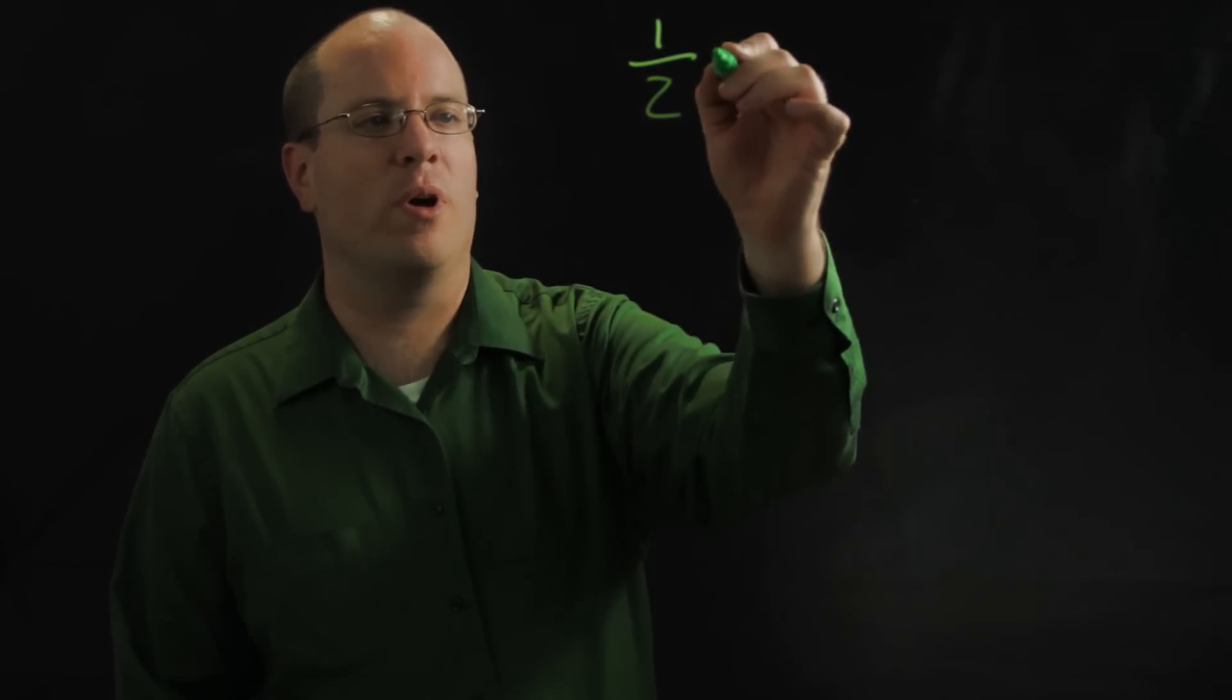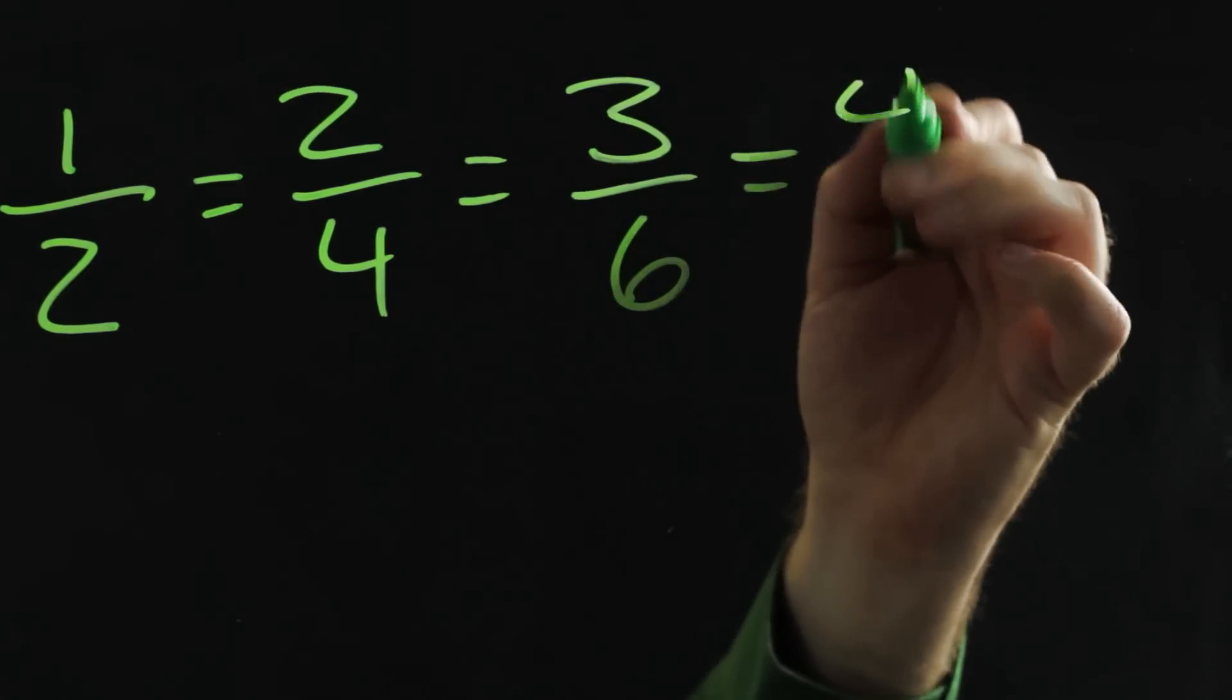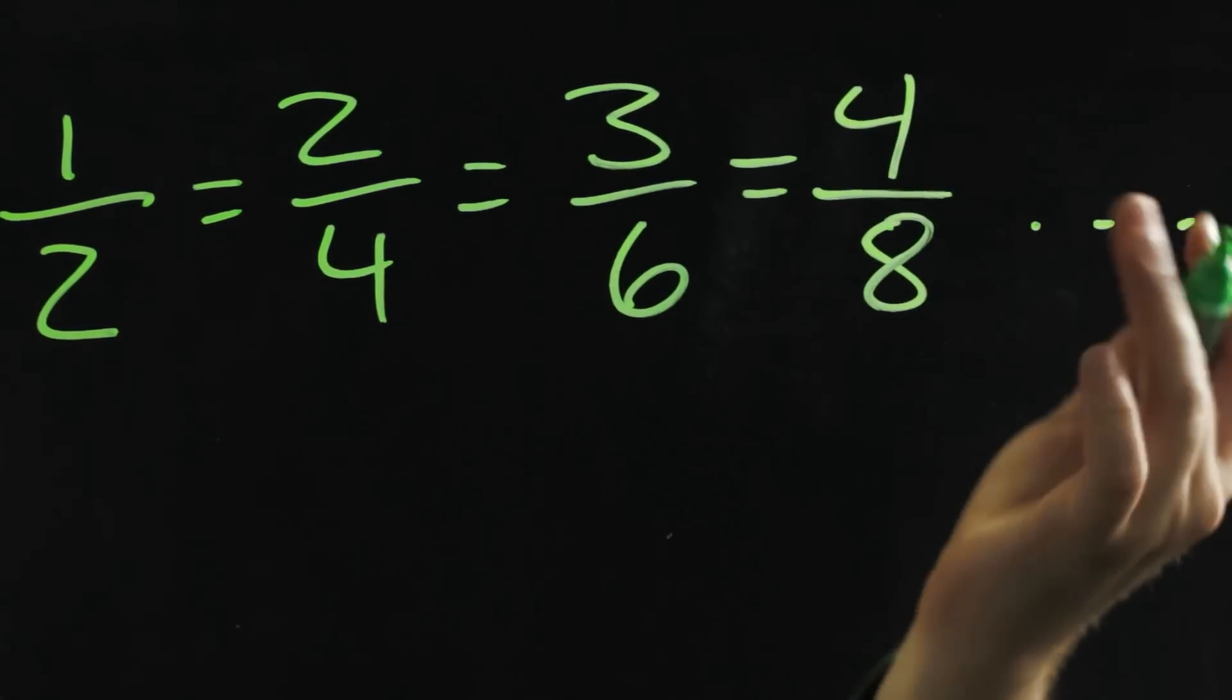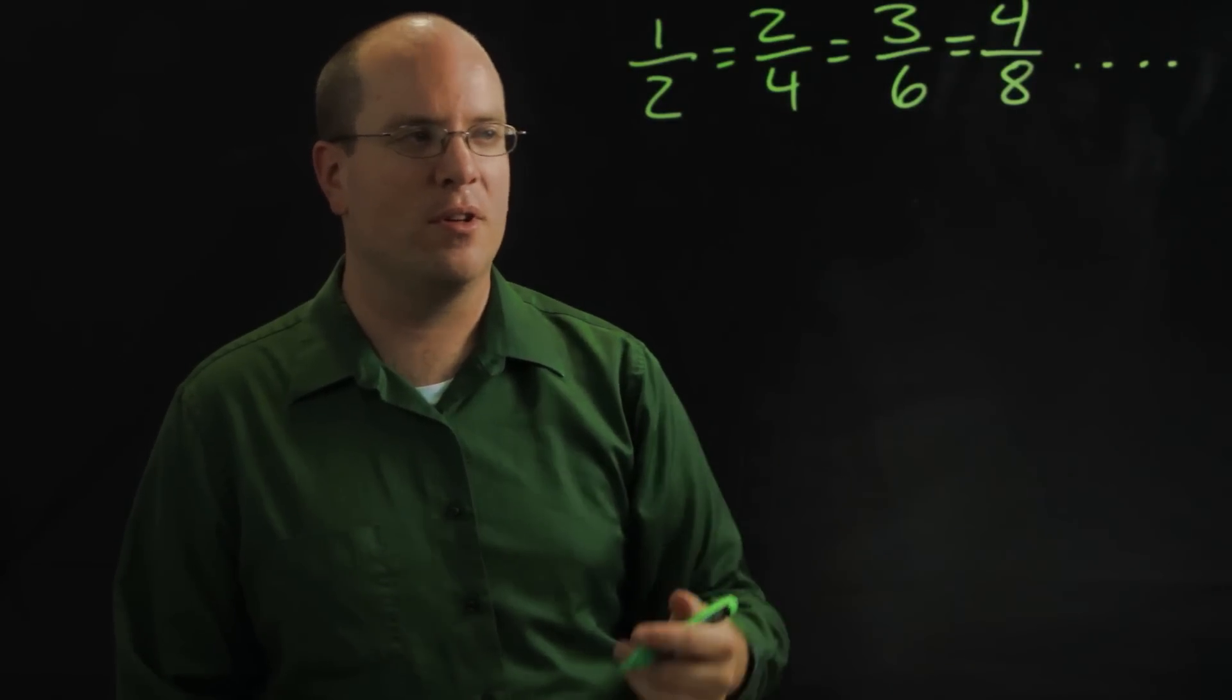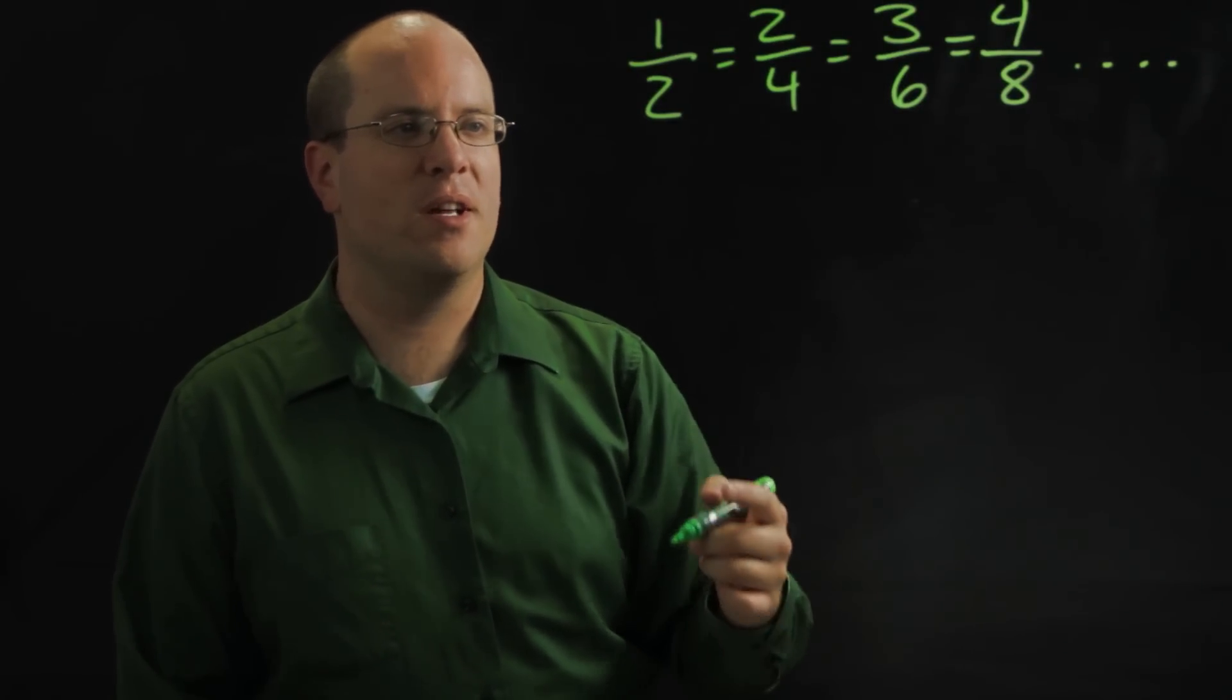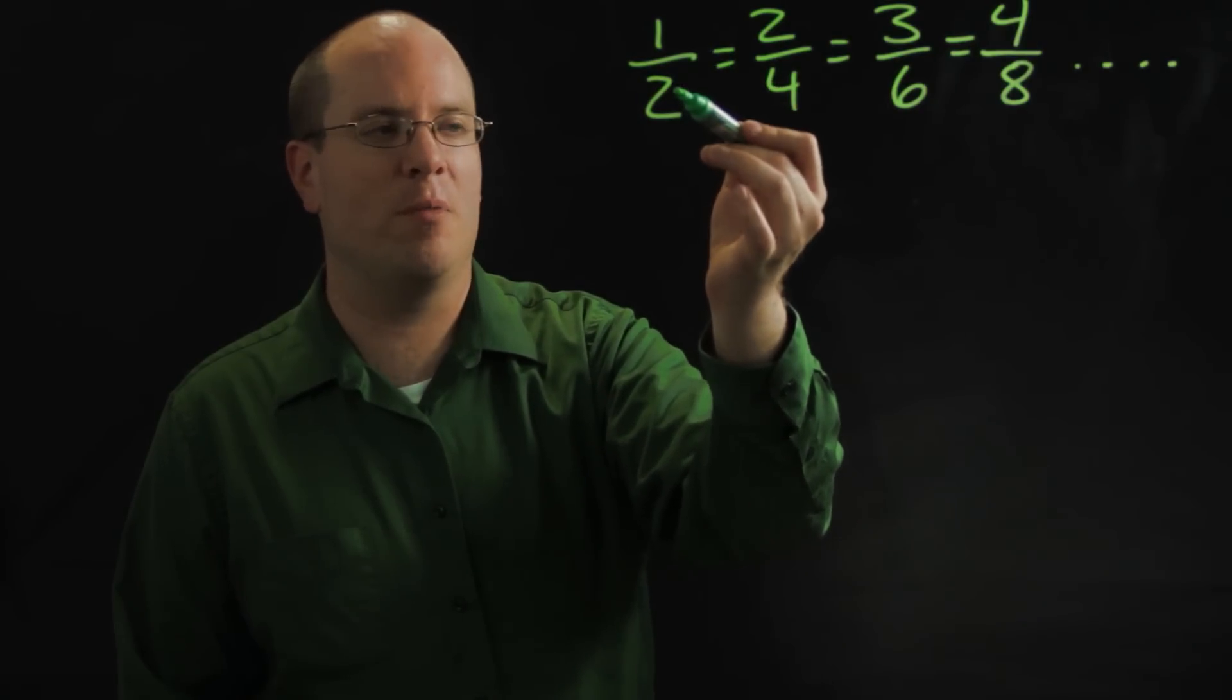So you know for one-half you'll get two-fourths, three-sixths, four-eighths, etc. They'll come up with all sorts of different ones. Fifty one-hundredths, one-thousand two-thousandths, and they'll actually start to see the relationship between the numerator and the denominator as well.